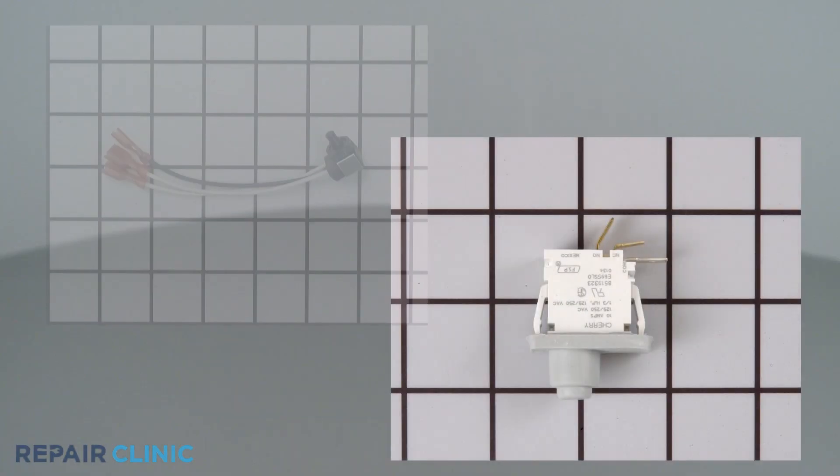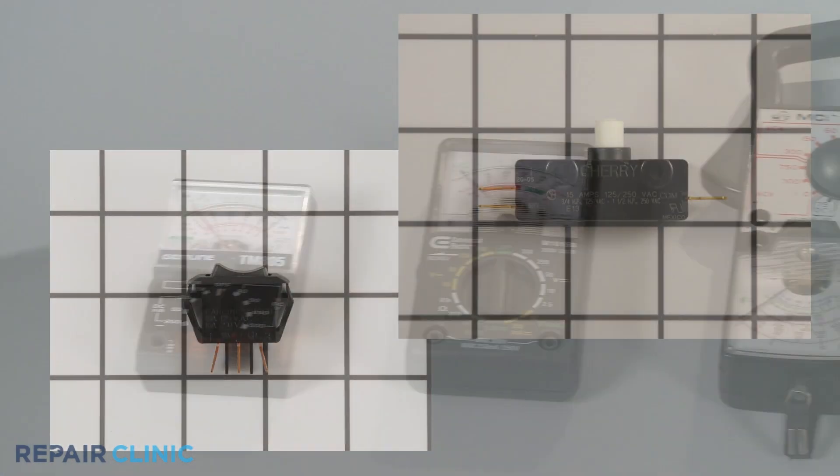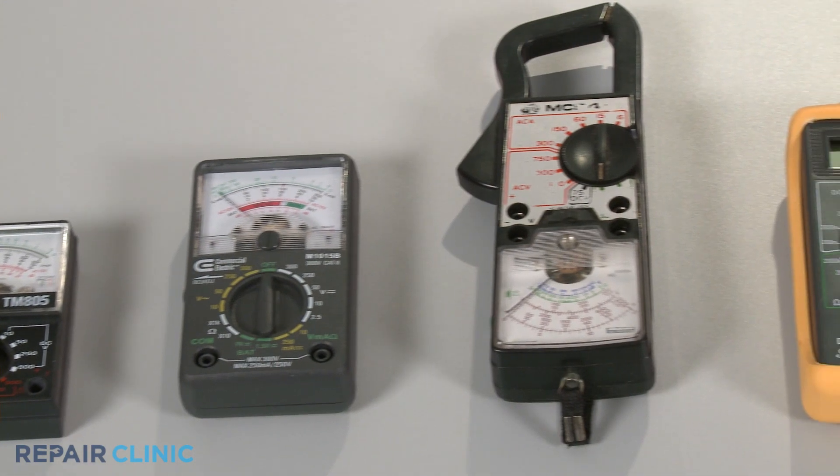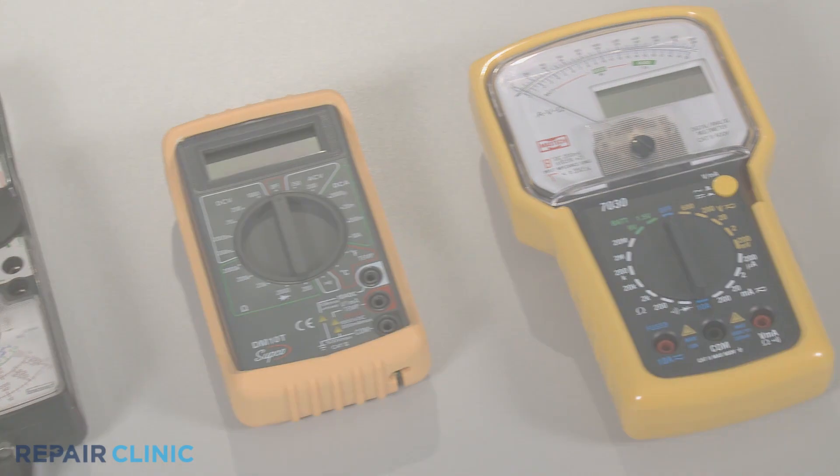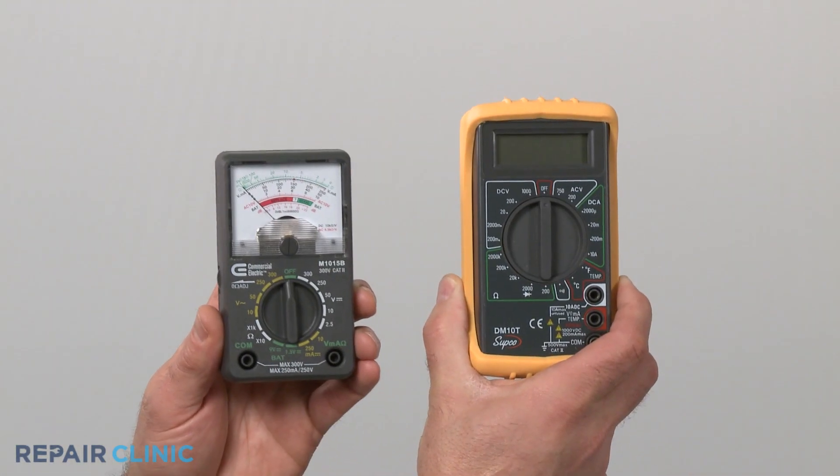Switches come in many shapes and sizes, but all of them can be tested for continuity, and you can choose from a variety of multimeters to perform the test. For this demonstration, we will use both analog and digital models.